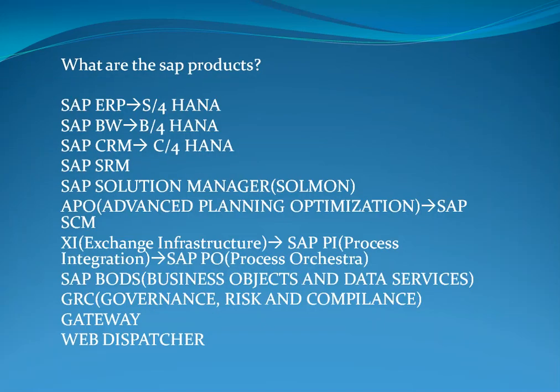What are the SAP products? These are the SAP products with their old name and new name. SAP ERP is the old name; now we call it S/4HANA. SAP BW is now called BW/4HANA. SAP CRM, SAP SRM, SAP Solution Manager i.e. SolMan.